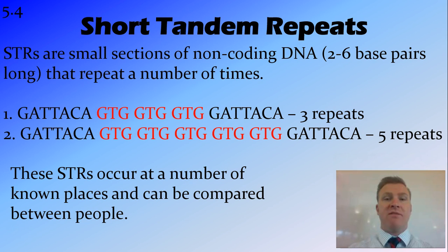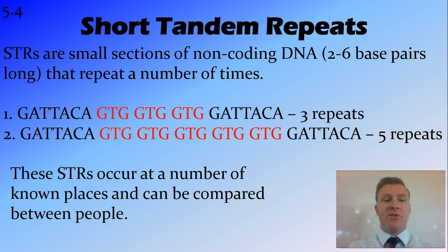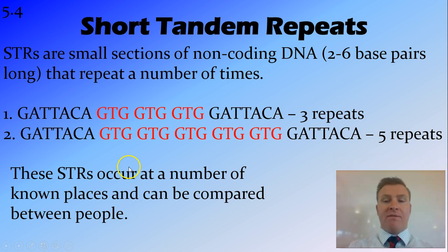This repetition is different in different people. For example, we've got an STR here for two different people. You can see that GTG repeats three times in person one and five times in person two.